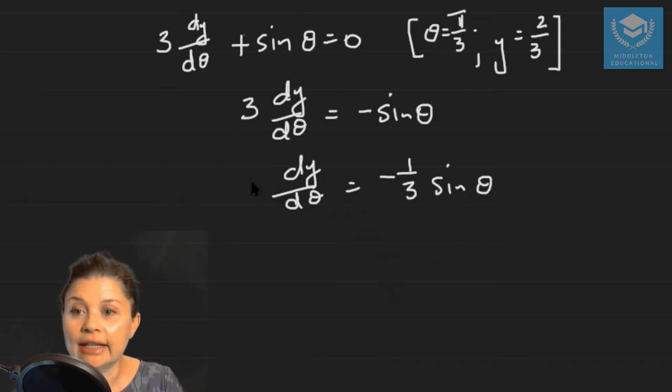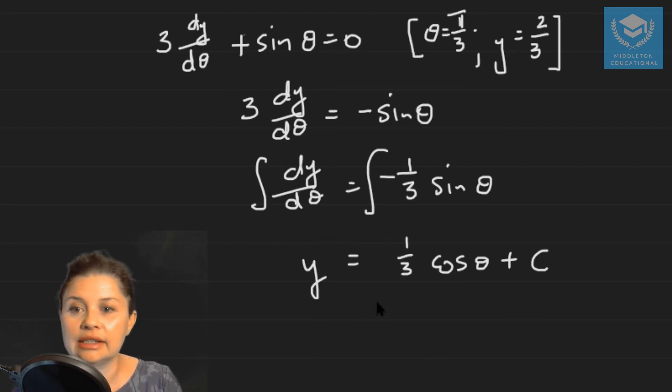When you've got that, you can just integrate both sides and you end up with y is equal to a third cos theta plus your constant. This is your general solution.